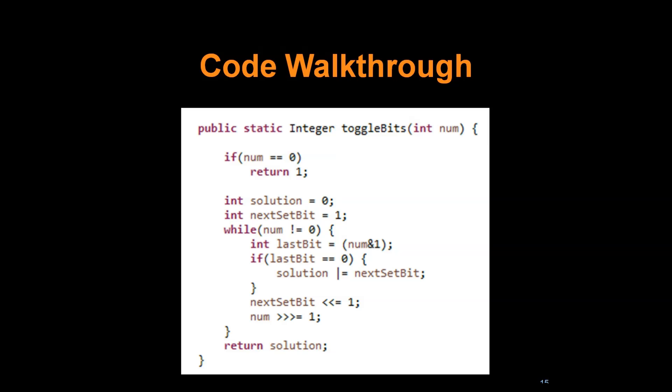Interesting thing here is that we are doing unsigned right shift denoted by three arrows to the right. Normal right shift operator fills the higher order bit with previous bit due to which the sign is preserved. When we do a right shift on a negative number, the higher order bit is replaced with 1.